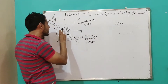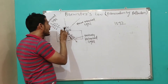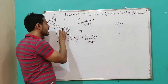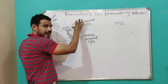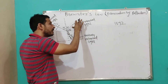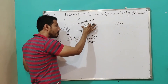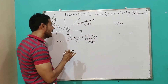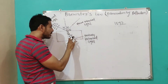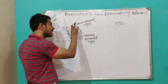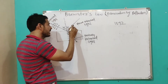When the light is incident on the transparent medium at the polarizing angle, then the reflected light becomes a plane polarized light. And the reflected ray and the refracted ray are separated by 90 degrees.